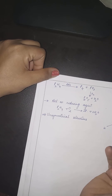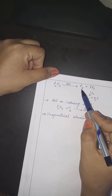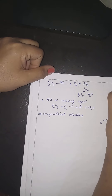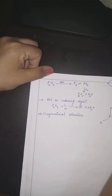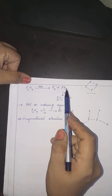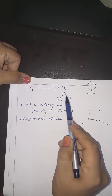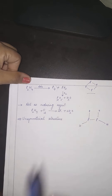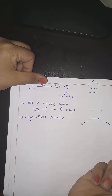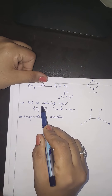P₂H₄ ki chemical properties bahut rare hain. Agar P₂H₄ ko air mein daala jaaye toh yeh fire catch karta hai aur P₄ aur PH₃ form hote hain. P₄ solid state mein tetrahedral structure mein exist karta hai. Agar phir se air ki presence mein reaction ho toh P₂O₅ aur water form hote hain — jaise hydrazine aur ammonia reducing agents the, usi tarah diphosphine bhi reducing agent hai.